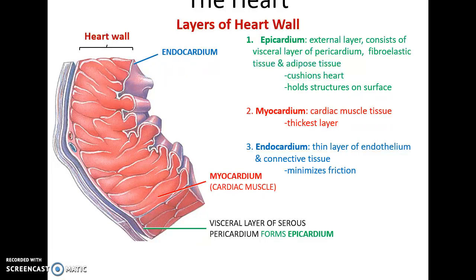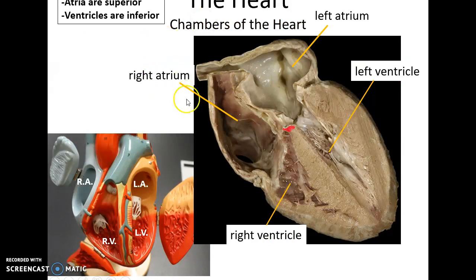The next layer is the myocardium, the thickest layer, made up of cardiac muscle tissue. Finally, the deepest layer is the endocardium, which is a thin layer of endothelium and some connective tissue. It is there to make the inside of the chambers of the heart nice and smooth to reduce friction as the blood moves against it.